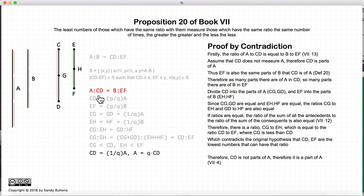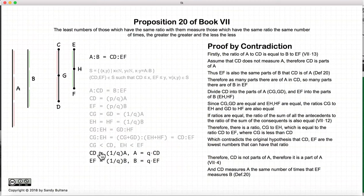So in other words, CD is not parts of A, it is one part of A, or in other words, CD measures A, and likewise, EF is not parts of B, it is one part of B, or EF measures B. And that is the proof that if CD and EF are the two smallest numbers that measure the ratio of A to B, then A and B are measured respectively by CD and EF.